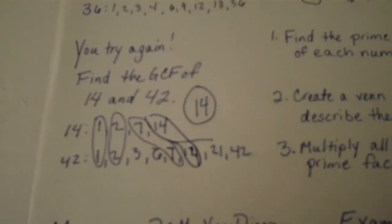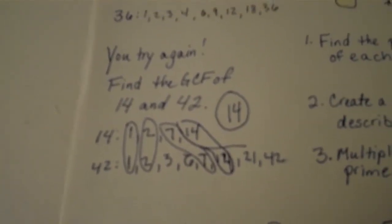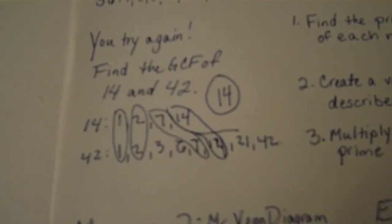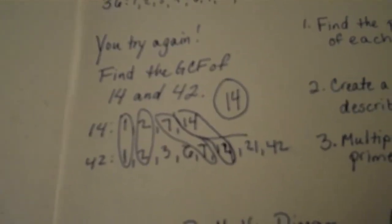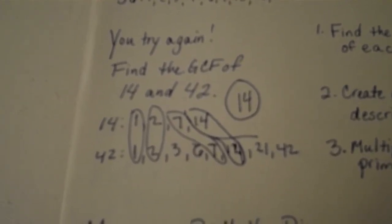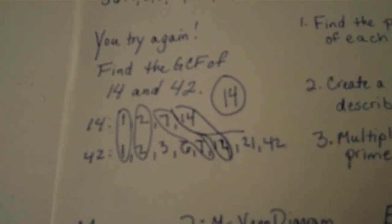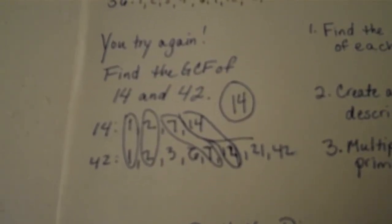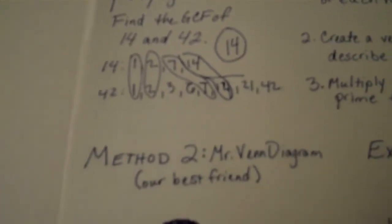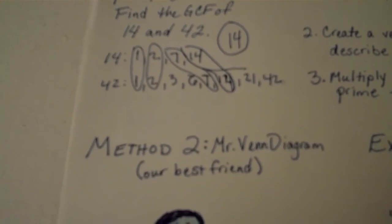Fourteen times three is forty-two. Sometimes we have numbers that are so big it's really hard to list all the factors, or sometimes they're just numbers we don't think about a lot and we might have trouble listing all the factors — like I just had trouble with forty-two. In this case, we've got a second method. Method two: Mr. Venn Diagram, our best friend.